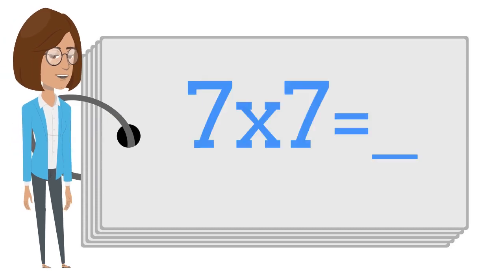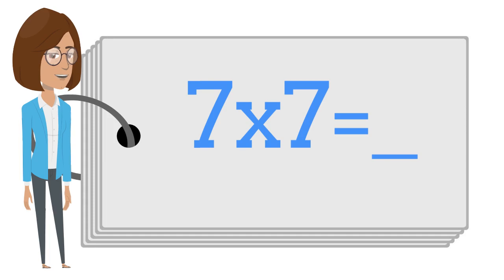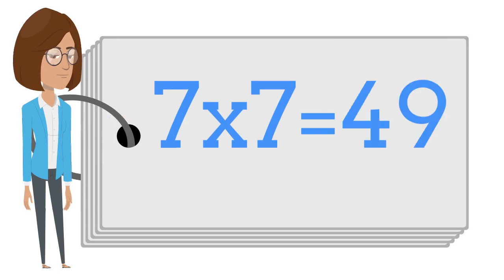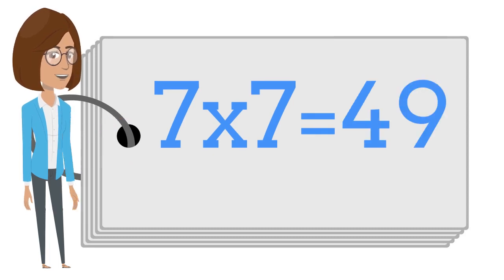7 times 7 is — say the answer out loud. 7 times 7 is 49.